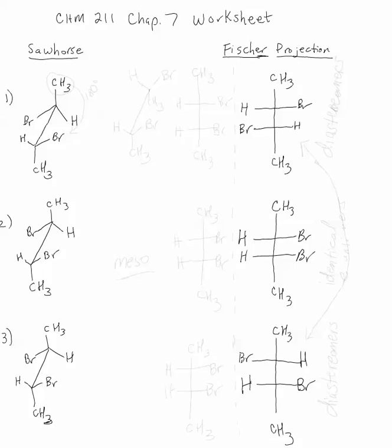So what I can do with this sawhorse is start by taking this methyl group and imagine twisting this bond around 180 degrees until that methyl group is pointing straight down and leave everything else the same. That's going to make it look like this. The bottom carbon looks the same. But now turning that methyl group 180 degrees means it's pointing straight down and it brings the bromine over to the other side of the molecule.